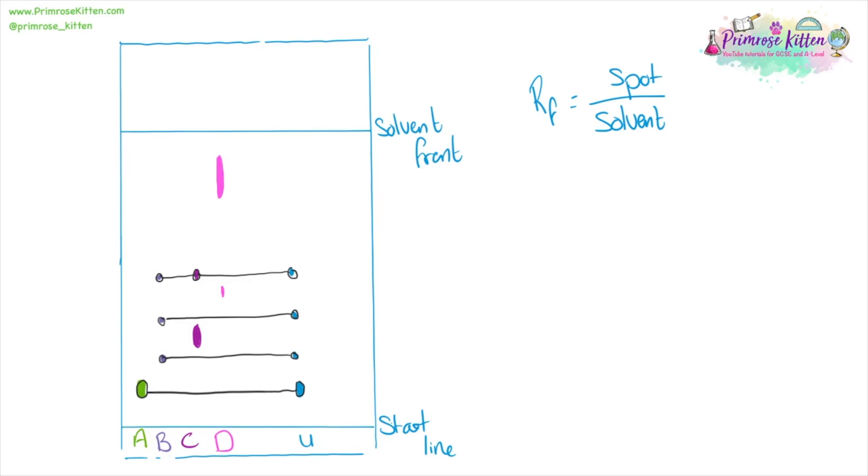So we can say that U is a mixture of A and B because all of the spots are in A and all the spots that are in B are also in U.